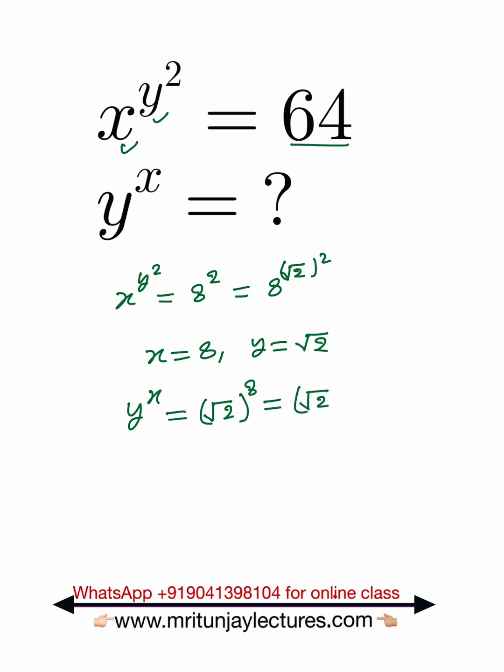I know that a to the power m to the power n is written as a to the power m times n, or you can say this one written a to the power n to the whole power m. Clear or not?